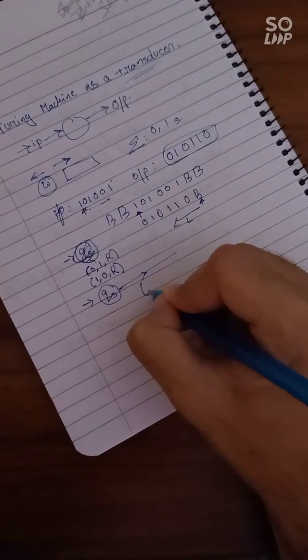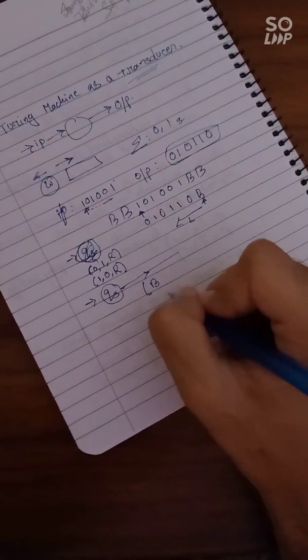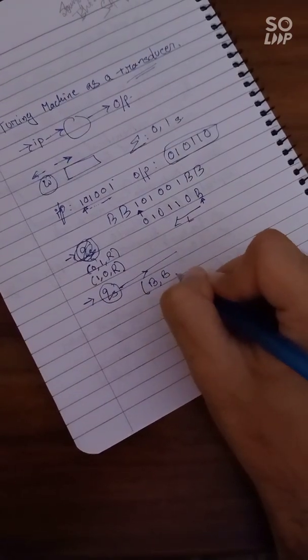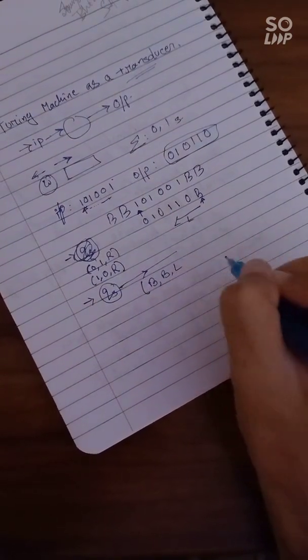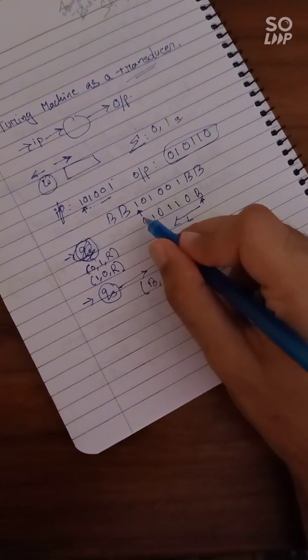Then we are moving right, moving right, we're moving right and we are doing this operation. Then once you reach blank, keep it as blank, then move left, move left because we are going to be back here.